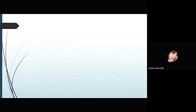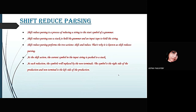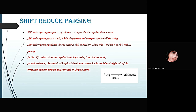Now I would like to go to the next slide about shift-reduce Parsing. Shift-reduce Parsing is a process of reducing a string to the start symbol of a grammar. It uses a stack to hold the grammar and an input tape to hold the string. It performs two actions: shift and reduce, and thus it is known as shift-reduce Parsing. At the shift action, the current symbol in the input string is pushed onto a stack. At each reduction, the symbols will be replaced by non-terminals — the right side of the production rule is popped out of the stack and the left-hand side is pushed onto the stack. In the adjoining figure, you can see a string getting reduced to the starting symbol, which is the basic operation of shift-reduce Parsing.